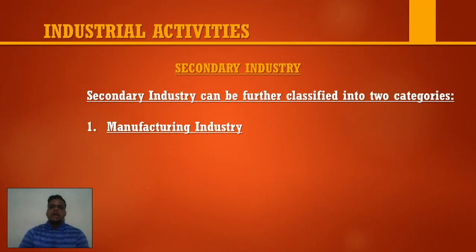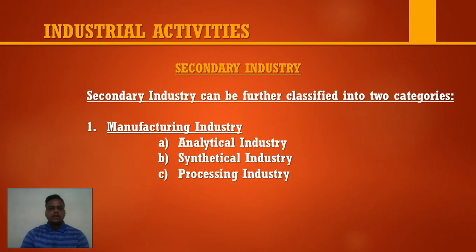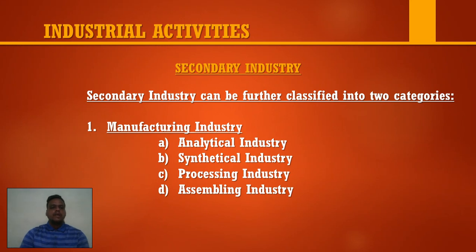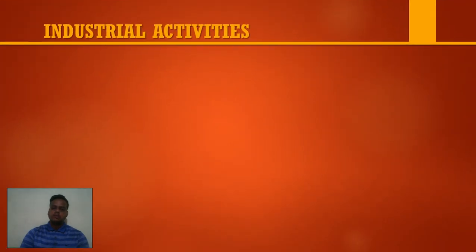Secondary industries are further divided into two categories. The first is manufacturing industry, which is further divided into four categories: analytical industry, synthetical industry, processing industry, and assembling industry. The second part of secondary industry is known as construction industry. Today we will study both manufacturing and construction industry.